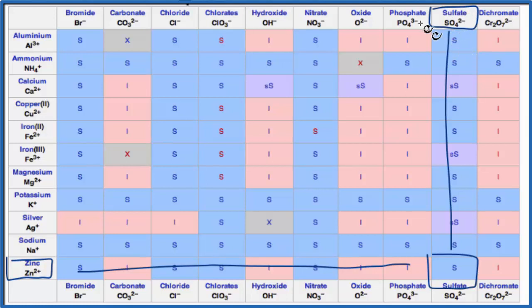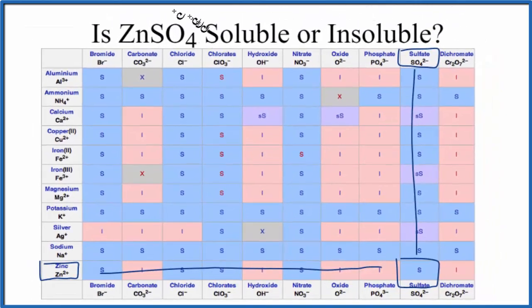There's one more way we could figure out whether zinc sulfate is soluble or insoluble in water. We could just take some crystals of zinc sulfate, put them in water, see what happened. Based on the solubility rules and then based on our chart here, we would expect that it would dissolve in water, that zinc sulfate would be soluble.